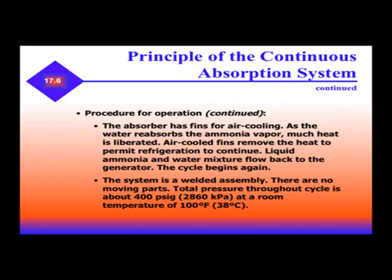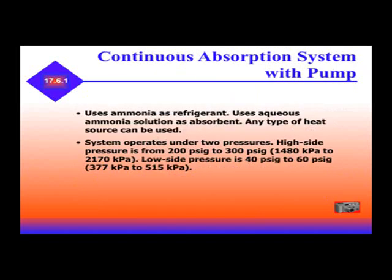The system is a welded assembly with no moving parts. Total pressure throughout the cycle is about 400 psi at a room temperature of 100 degrees. It uses ammonia as a refrigerant and aqueous ammonia solution as an absorbent. Any type of heat source can be used. The system operates with a pump under two pressures: high side pressure is 200 to 300 psi, and low side pressure is 40 to 60 psi.